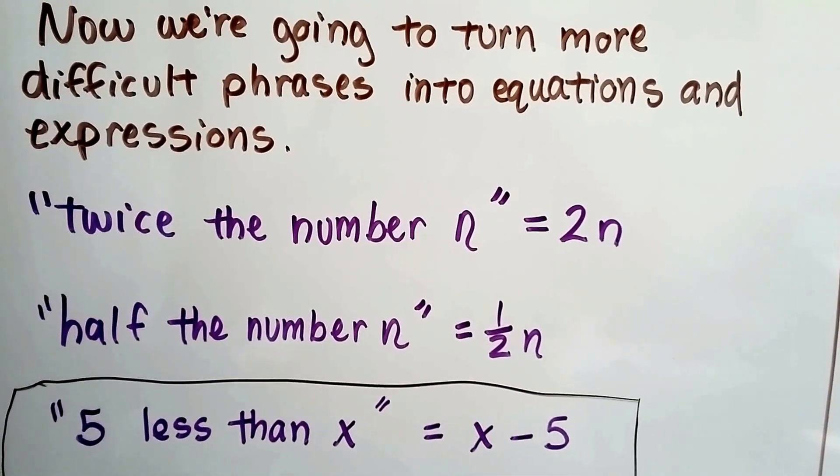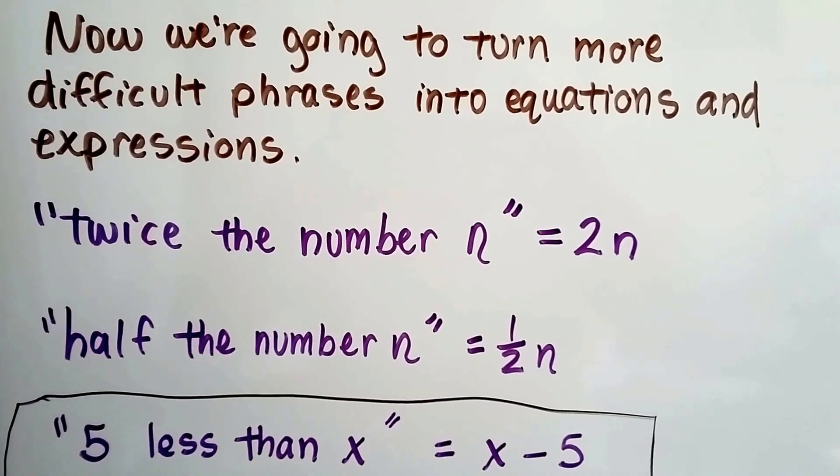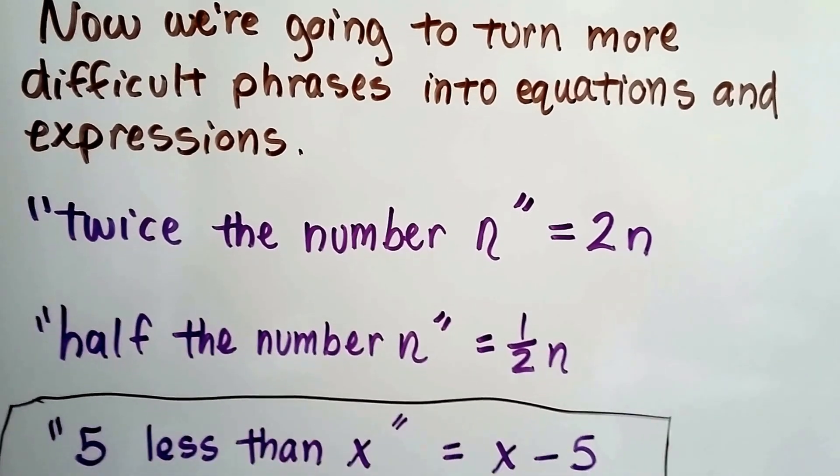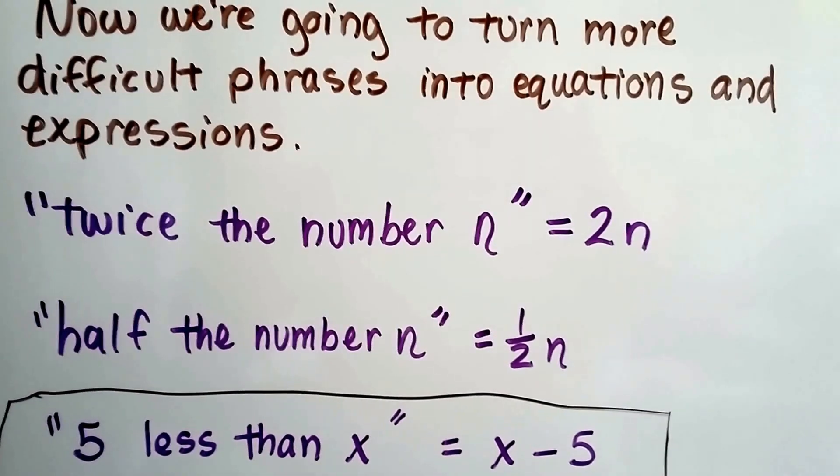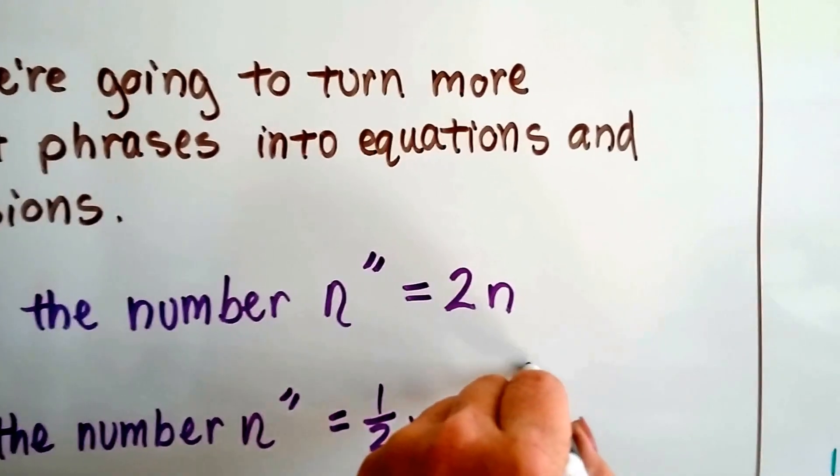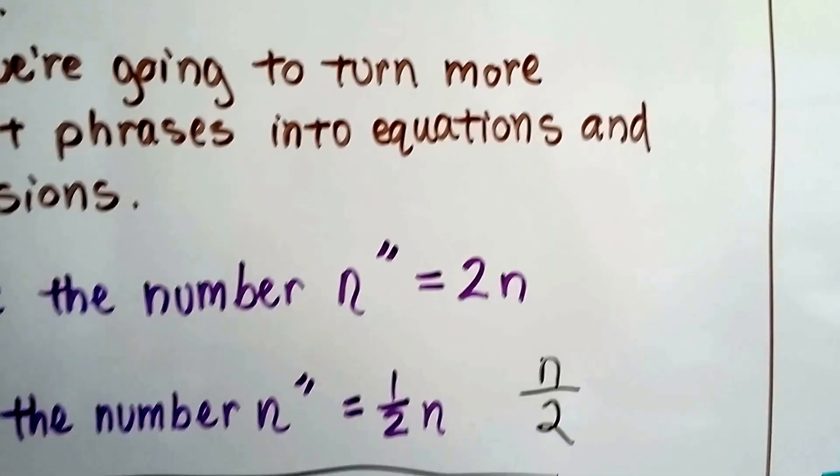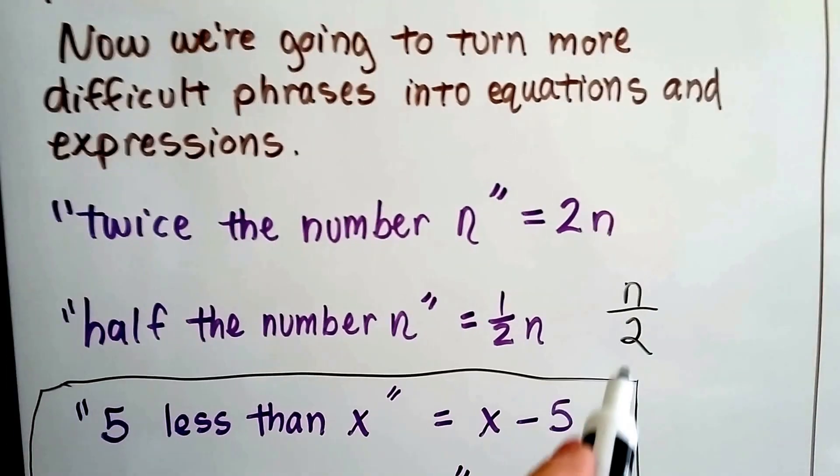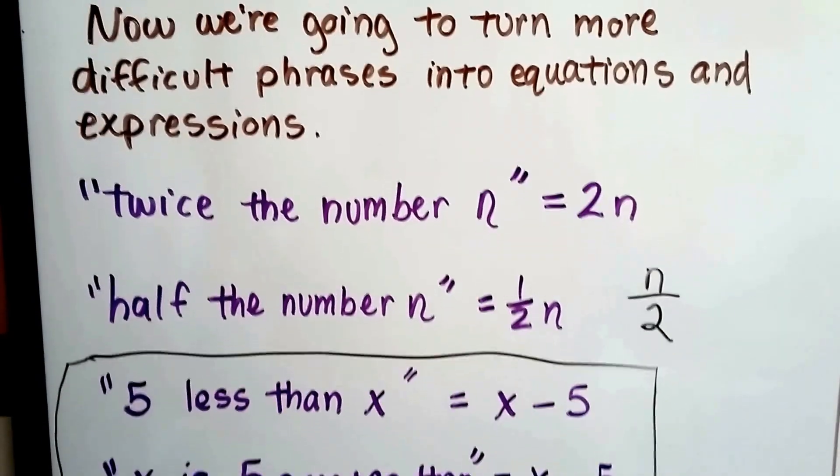If you see twice the number n, it just means 2n, 2 times n. If you see half the number n, it means half times n. It could also mean n divided by 2, couldn't it? That's the number that would be half of it, if you divided it by 2.